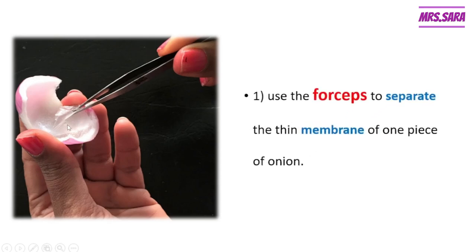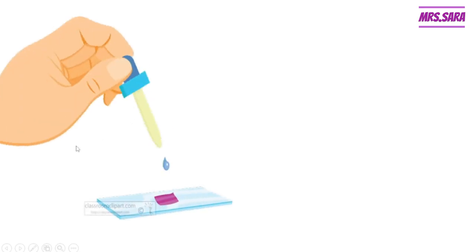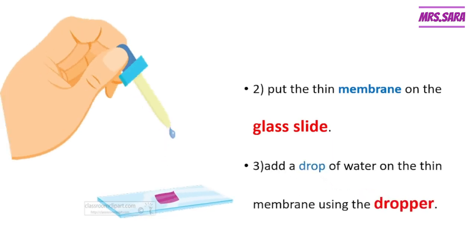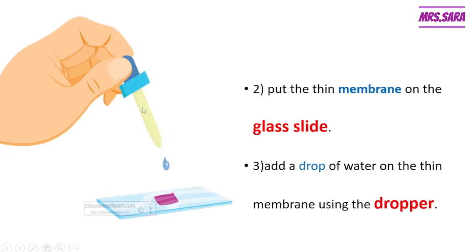The first step is to take one piece of onion and use forceps to take the thin membrane of the onion. The second step is to put the thin membrane on the glass slide, then add one drop of water on the thin membrane using the dropper.